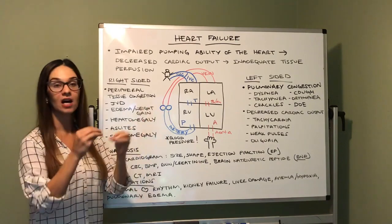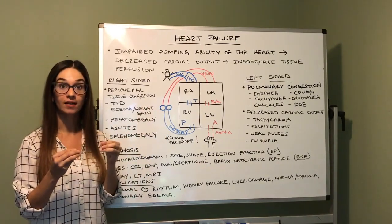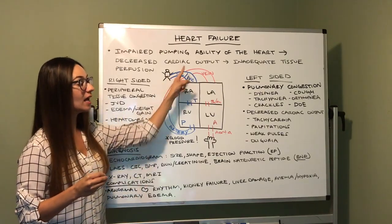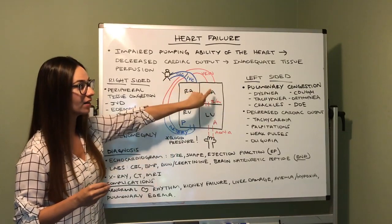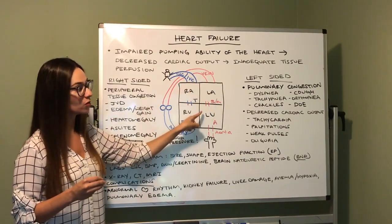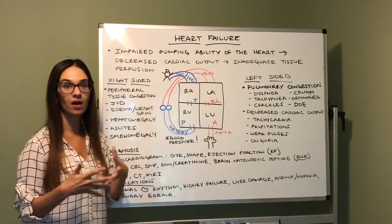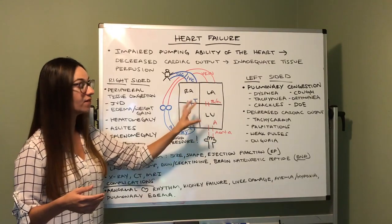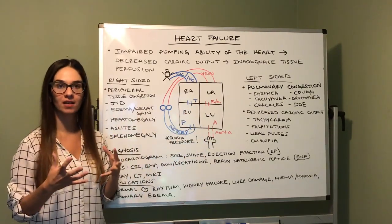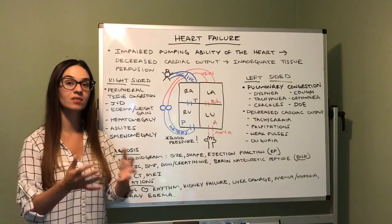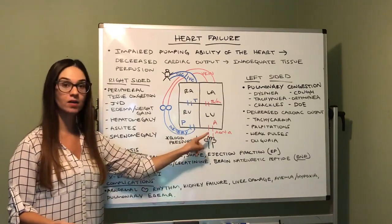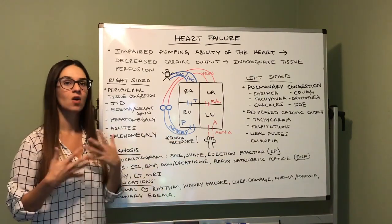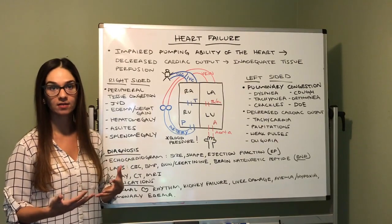Our lungs allow for gas exchange in the alveoli for CO2 and oxygen to be exchanged. Oxygen goes into our blood and the pulmonary vein carries it to the left atrium. It goes through the bicuspid or mitral valve — they're used interchangeably — to the left ventricle. The left ventricle is the primary portion of our heart that injects the majority of our oxygenated blood into our aorta, which carries it to all of the tissues, cells, and organs in our bodies.